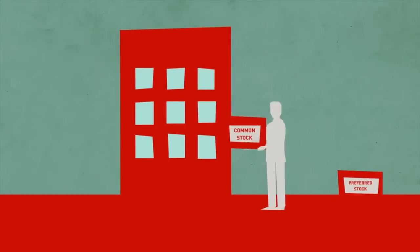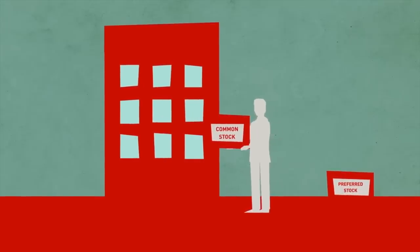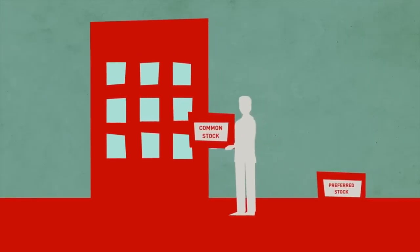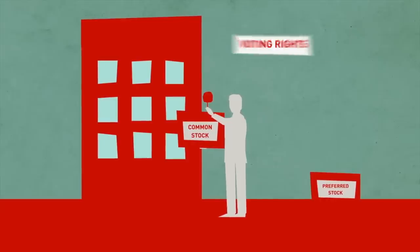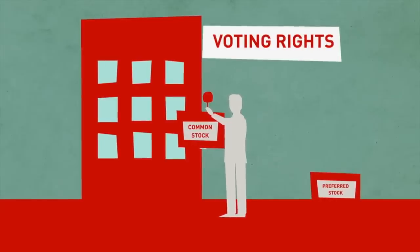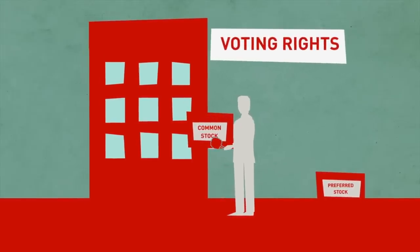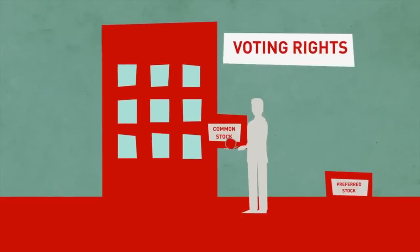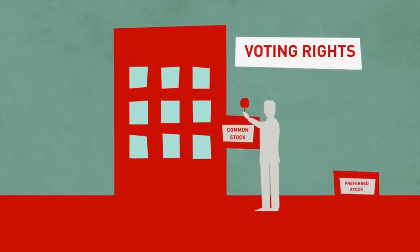When you purchase common stock, you are considered a shareholder and therefore part owner of the issuing company. This ownership comes with voting rights that allow you to participate in the election of the company's board of directors and to vote on certain corporate policies.